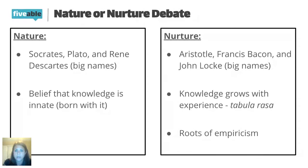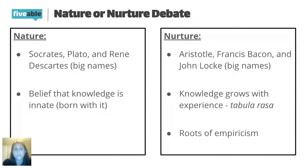On the nurture side of the debate are Aristotle, Francis Bacon, and John Locke. This unit has a lot of names, so giving them context makes them easier to remember. The big idea on the nurture side is John Locke's concept of tabula rasa — a blank slate. We're born completely blank and our knowledge and experience write on the slate of our life. As we experience things, our slate fills up and we become who we are.